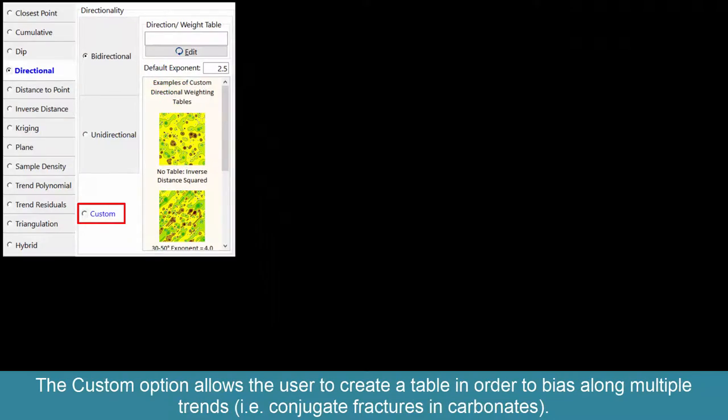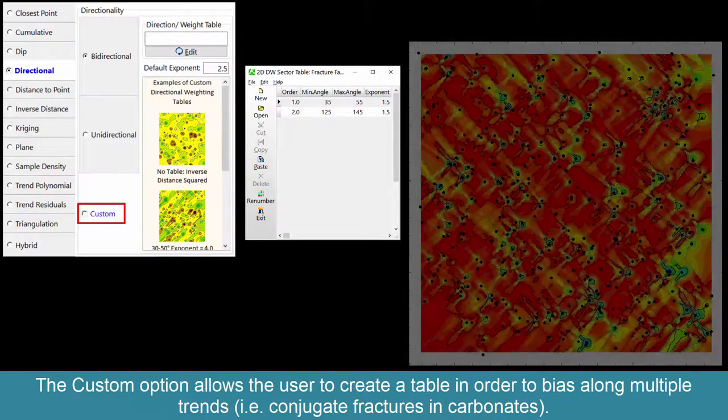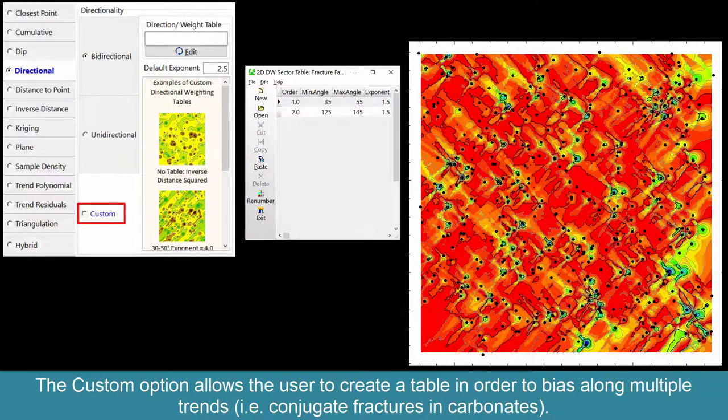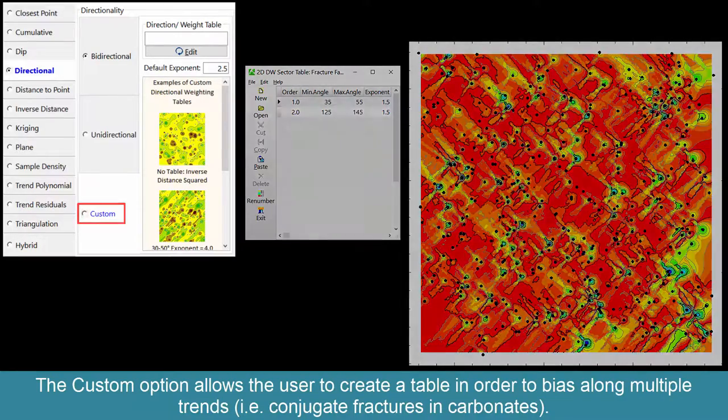The custom option allows the user to create a table in order to bias along multiple trends, such as conjugate fractures within carbonates.